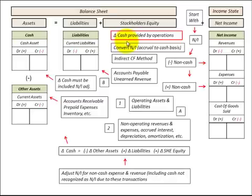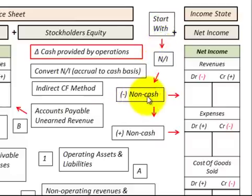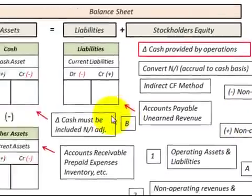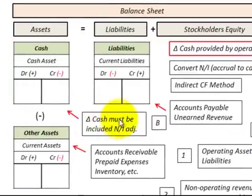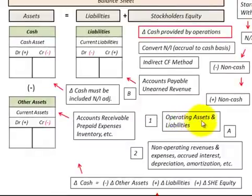To determine our cash provided by operations, we're going to convert our net income from the accrual to the cash basis. We start with net income, subtract out any non-cash revenues, and add back any non-cash expenses. We also need to look at cash that must be included in our net income adjustments for operating assets and liabilities, as well as non-operating revenues and expenses.